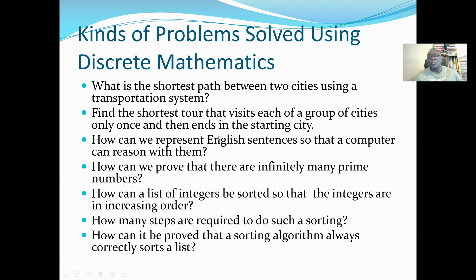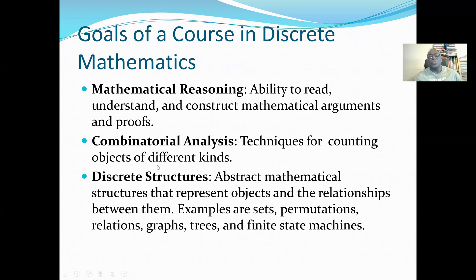What is the shortest path between two cities using a transportation system? Or how do we find the shortest route that visits each city in a group only once and ends at the starting city? This involves graph theory — concepts of paths and network systems. How can we represent English sentences so that a computer can reason with them? And how can we prove there are infinitely many prime numbers? These are all different kinds of problems that use discrete mathematics.